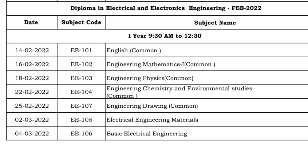Next is Electrical and Electronics Engineering (EEE). Same morning section, 9:30 to 12:30. First year exams: English on 14th, Engineering Mathematics on 16th, Engineering Physics on 18th, Engineering Chemistry on 22nd, Engineering Drawing on 25th, and Electrical Engineering Materials in the second week of the third month.